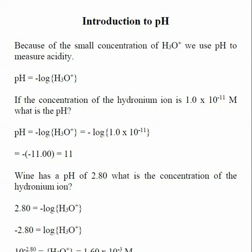Chemists typically talk about the relative acidity and basicity of solutions using the pH scale. pH means the negative log of the concentration of hydronium in a given solution. We use the pH scale just to make it easier to represent these numbers, and it's also going to make some of our calculations easier as we go along.